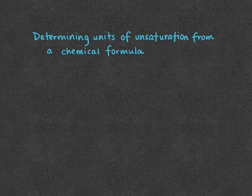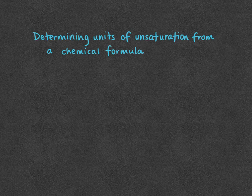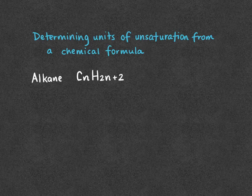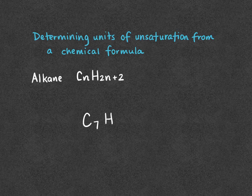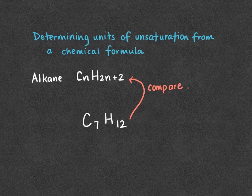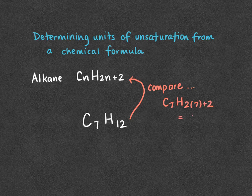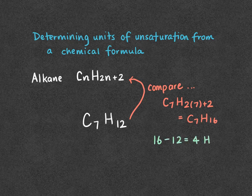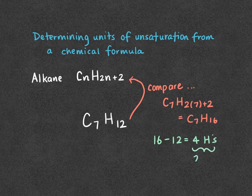Now we're going to look at how we can determine the number of units of unsaturation from a chemical formula. To do this, we need to know that the general formula for an alkane is CnH2n plus 2. So if I have the formula C7H12, I'm going to compare this directly to this formula. If an alkane had seven carbons, it would be C7H16. Since we only have 12, we can take the difference. So we have four hydrogens. This is two units of unsaturation.